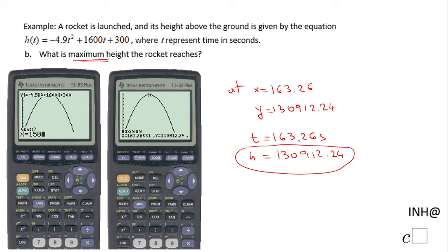Of course you can do this problem algebraically. Remember the negative b over 2a formula that will give you the x coordinate or the t coordinate in our case of the vertex. Then you take that value and you plug it in your h function and you're gonna get the maximum in this case or the minimum if that's the case.